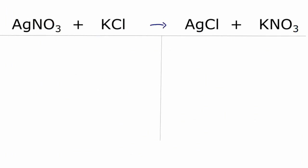To balance this equation, AgNO3 plus KCl yields AgCl plus KNO3, let's add up the atoms on both sides of the equation.